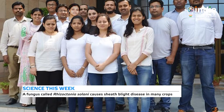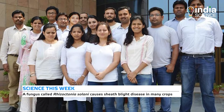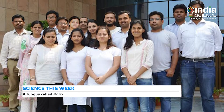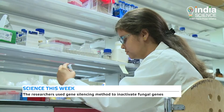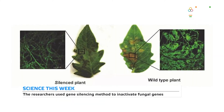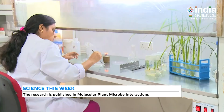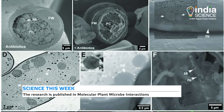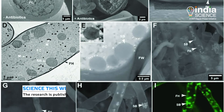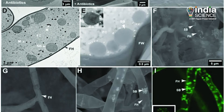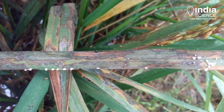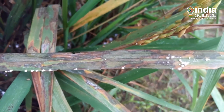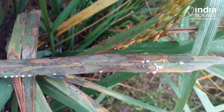A recent study by NIPGR researchers has found that downgrading the expression of the fungal genes may be helpful in formulating effective strategies against sheath blight disease. This is the first time that fungal genes have been inactivated in Rhizoctonia solani by interfering with RNA using the gene silencing method.